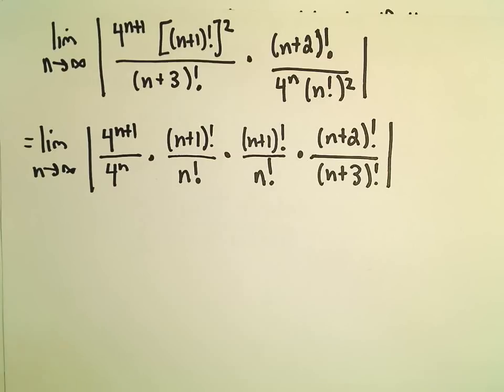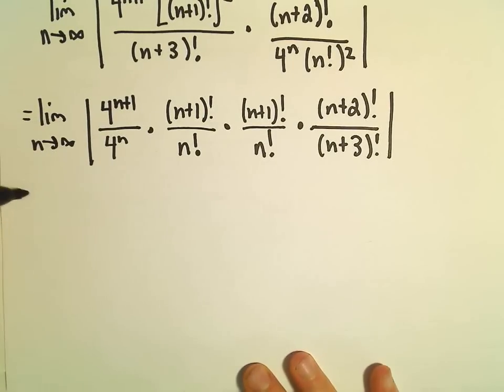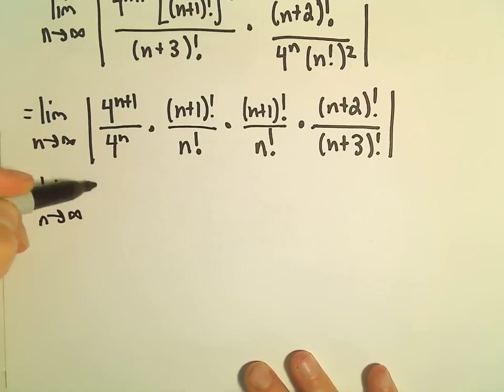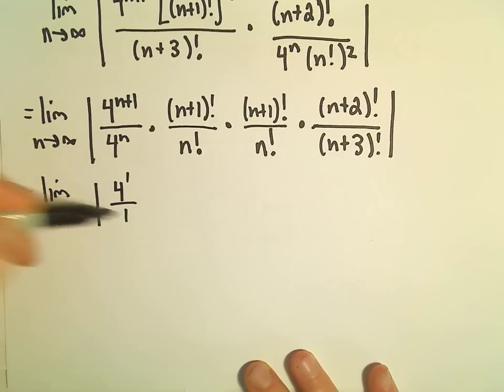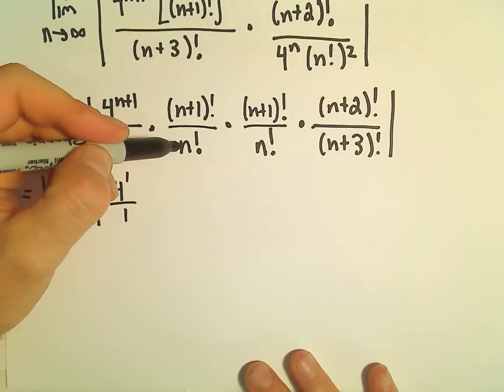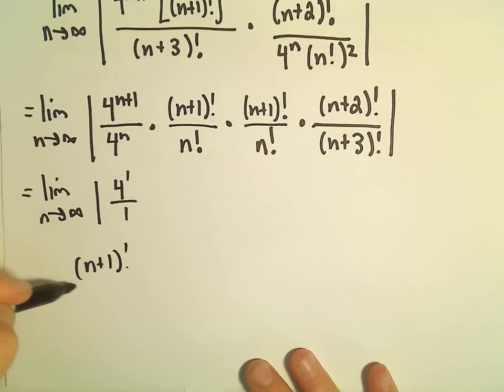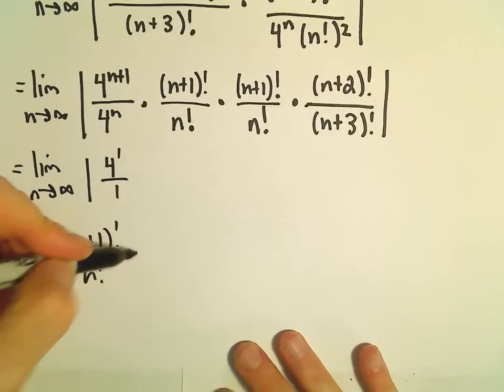Alright, so I think the first part's easy. We just have 4 to the n plus 1 over 4 to the n. That'll just be a 4 to the 1st in the numerator. n plus 1 factorial over n factorial.